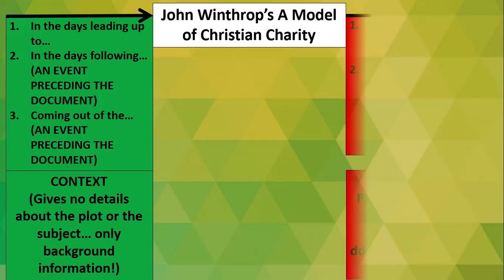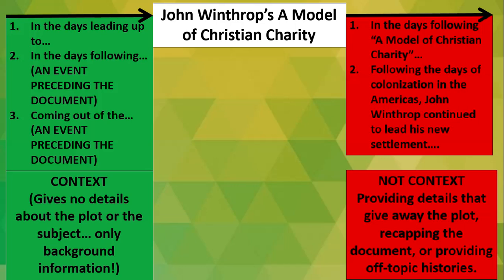Here are some common mistakes — here's what's NOT context. On a timeline, everything that leads up is good — shown in green — but everything that happens after Winthrop's 'A Model of Christian Charity' is not really what I'm looking for with context. For example, 'In the days following A Model of Christian Charity...' — that's not going to be a good example of contextualization. Number two: 'Following the days of colonization in the Americas, John Winthrop continued to lead his new settlement' — we'll stop right there. That's providing details that give away the plot. A lot of students just recap documents thinking that's good enough for historical context. I don't want a recap of the document — I want that background information.